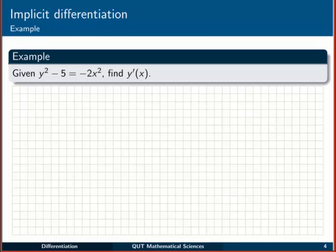In this example we're just going to focus purely on the mechanics of the process of implicit differentiation. We're given here a relationship, y squared minus 5 equal to minus 2x squared. Now we can't rearrange that and solve for y as a single function of x. We can rearrange and get y equal to plus or minus something, but we don't really want that, that's actually giving us two functions. So what we're going to do is treat this as an implicit relation, and differentiate it to find y dashed of x using the implicit differentiation method.